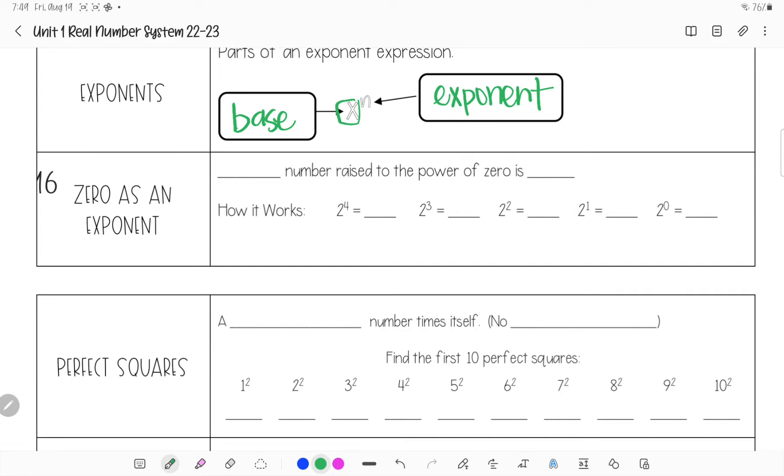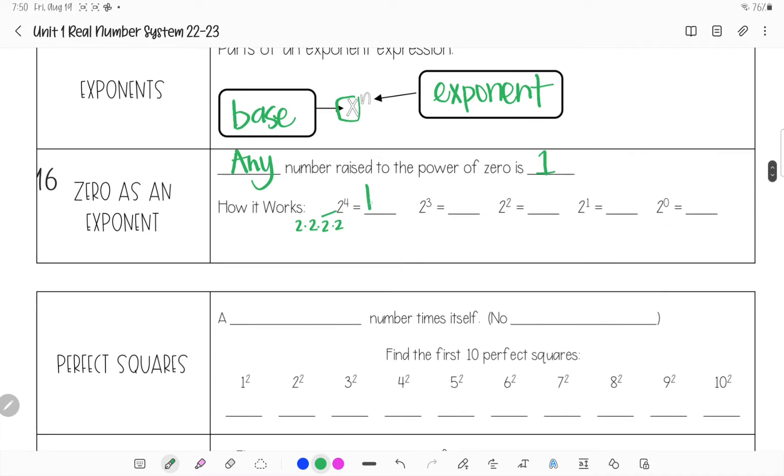Zero as an exponent. Any number raised to the power of zero is one every time. Again, this should not be new to you. But I'm going to show you why this is. So 2 to the fourth power means 2 times 2 times 2 times 2. Well, 2 times 2 is 4 times 2 is 8 times 2 is 16. 2 to the third power means 2 times 2 times 2. 2 times 2 is 4 times 2 is 8. 2 to the second power means 2 times 2, which is 4. 2 to the first power is 2.